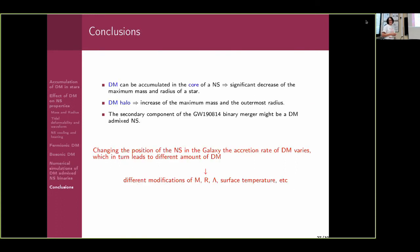Further studies are needed considering different dark matter models — more realistic mirror dark matter — and also a halo configuration with more detailed dynamics. The main conclusions are: dark matter accumulated in the core leads to a significant decrease of maximum mass, radius, and tidal deformability; in the case of a dark matter halo, there is an increase of maximum mass and outermost radius. The secondary component of GW190814 could be explained as a dark matter admixed neutron star, keeping both the nuclear physics and gravitational wave communities in agreement.